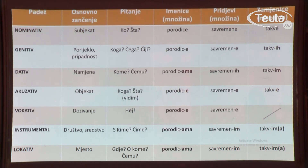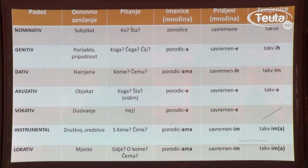Isto je i sa zamjenicom: takvim – dativ, instrumental takvim i lokativ takvim. Kao i kod imenice porodica: kome, čemu – porodicama; s kim – sa porodicama; i o kome, o čemu – o porodicama.